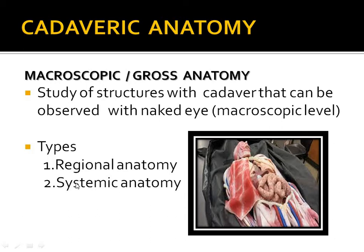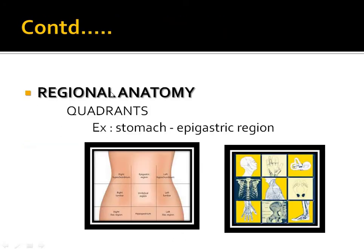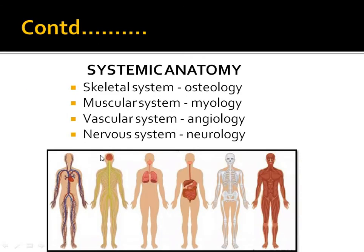Gross anatomy is divided into two types: regional anatomy and systemic anatomy. Regional anatomy means we study anatomy region-wise. For example, in the nine quadrants of the abdomen, the stomach is located in the epigastric region — that is regional anatomy.